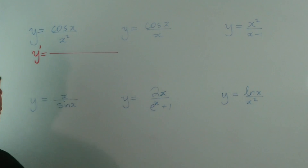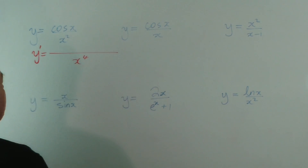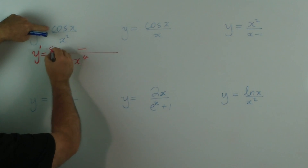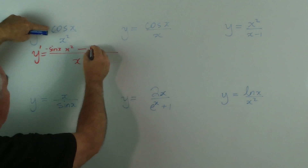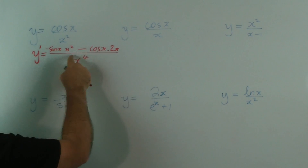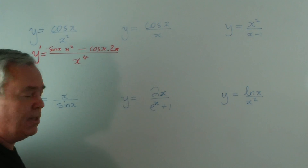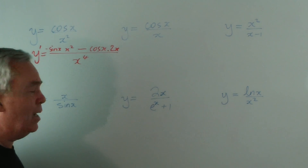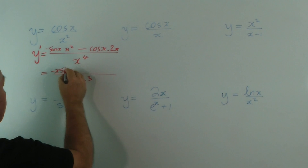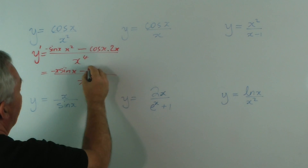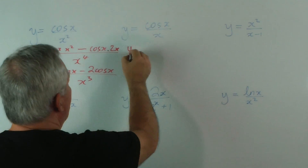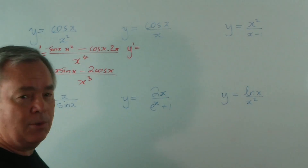I like to write things in a slightly different order. I square the bottom first, write my minus sign, and then find the derivative of cosine — which is minus sine x — and leave the x squared alone, then write the cosine of x and multiply by the derivative of that. I can see that x would divide out; I don't want to get too bogged down in simplifying expressions because I'll deal with that in other videos.